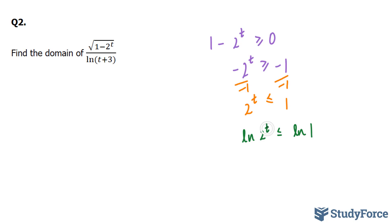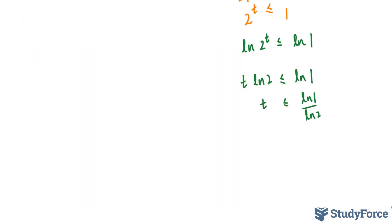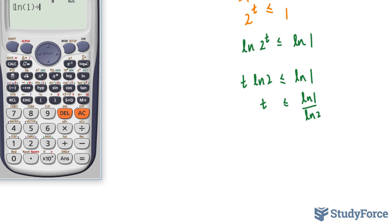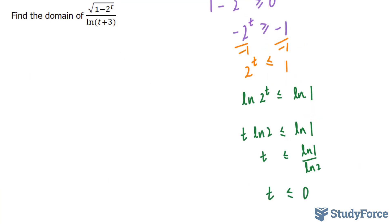This t goes to the front. That's the power rule in logs. And on the right side, you have ln(1). Now to isolate for t, you're going to divide both sides by ln(2). ln(1) divided by ln(2), let's use our calculator, gives us 0. So t ≤ 0.